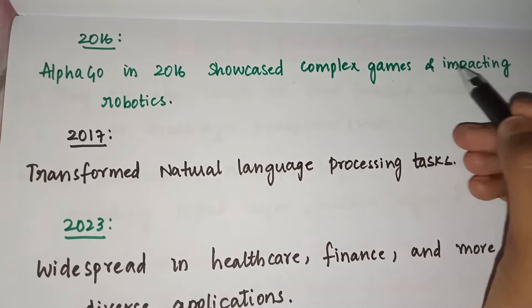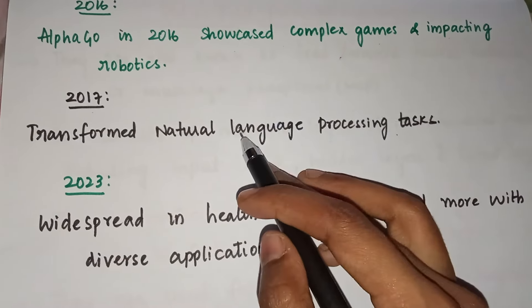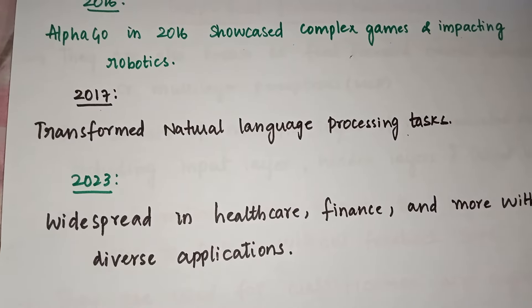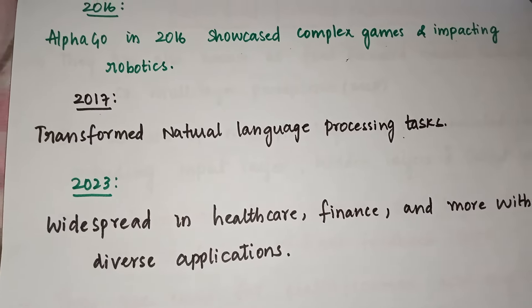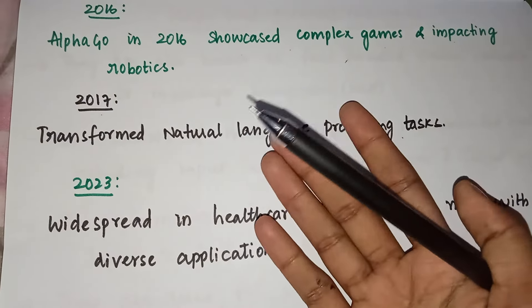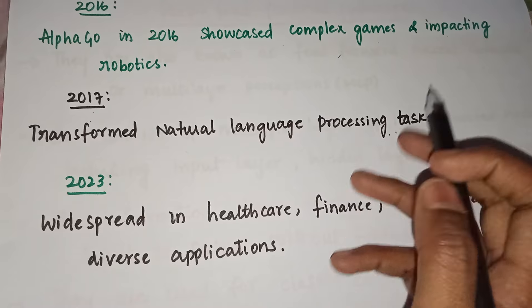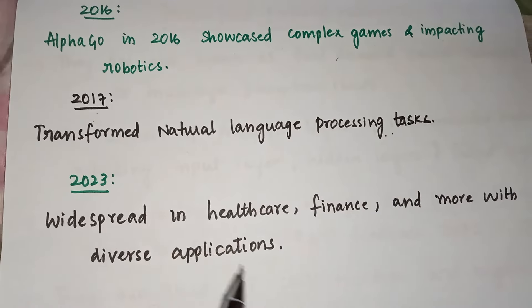In 2017, it transformed natural language processing tasks. Natural language processing is essentially translation — like Google Translate — where if you speak in one language, it will translate to another. So in 2017, deep learning transformed these natural language processing tasks.